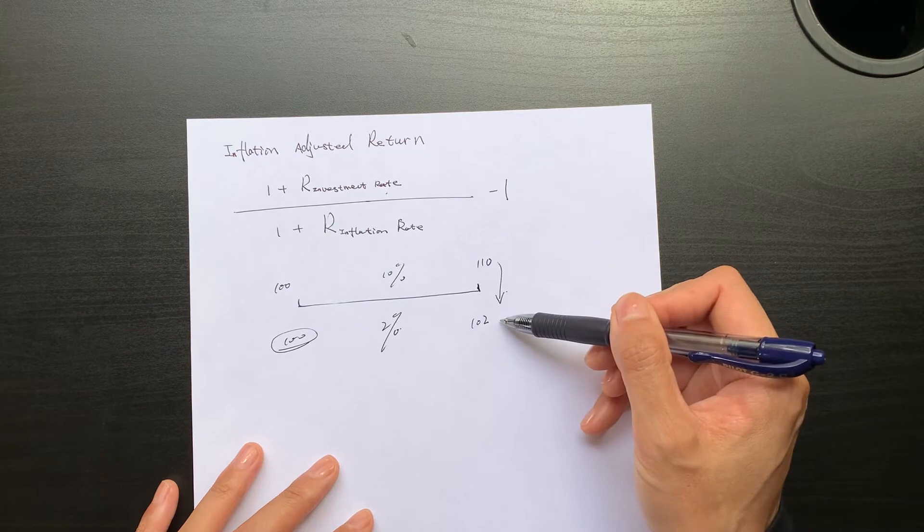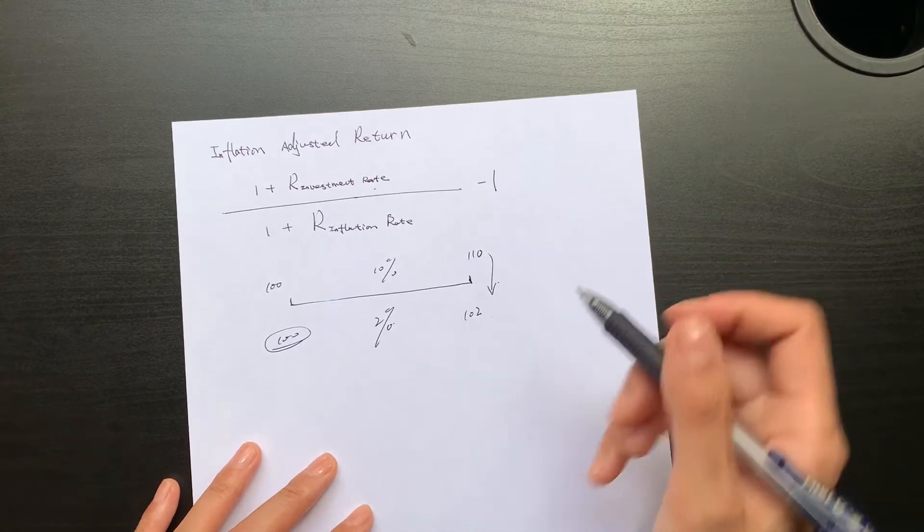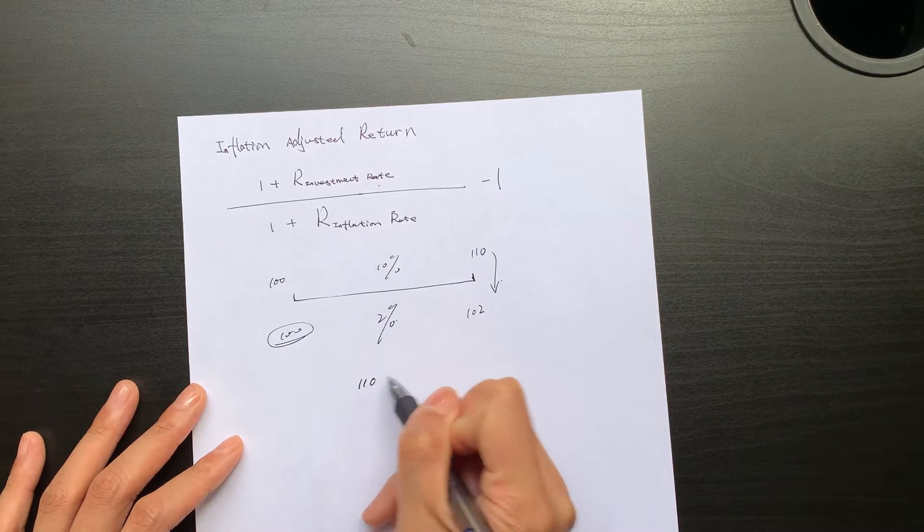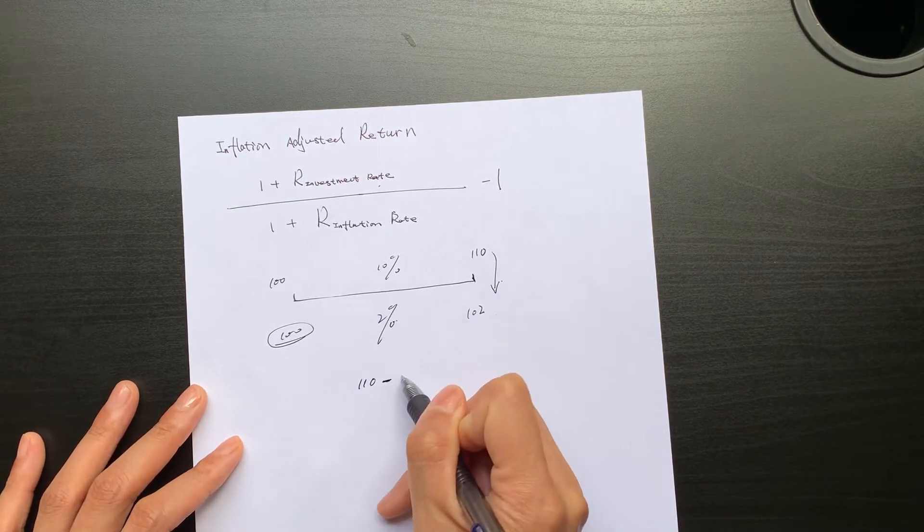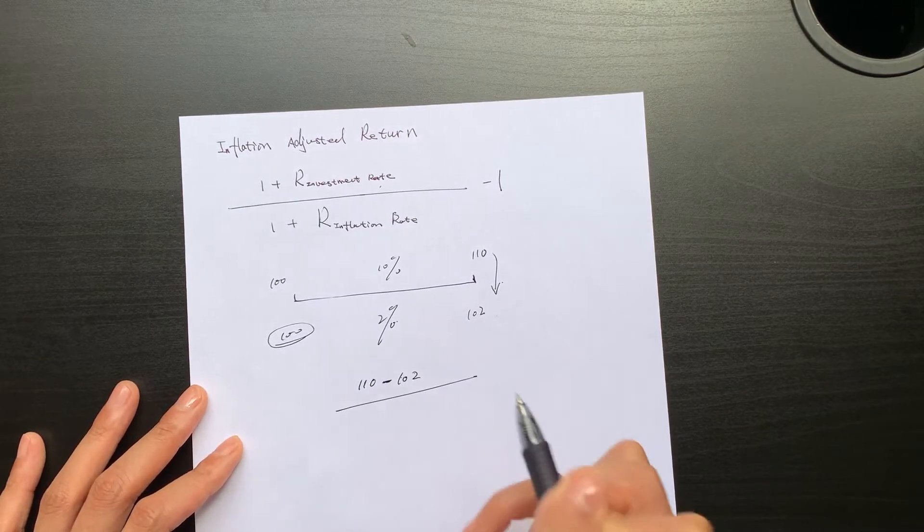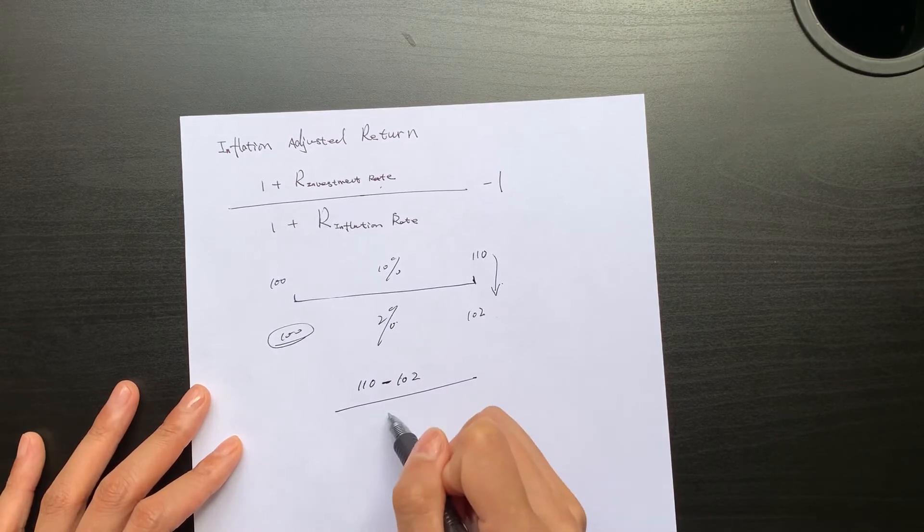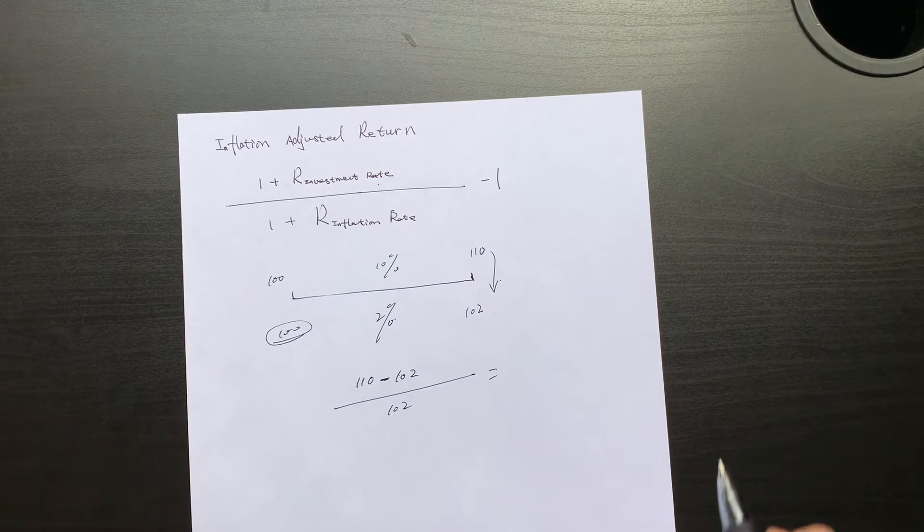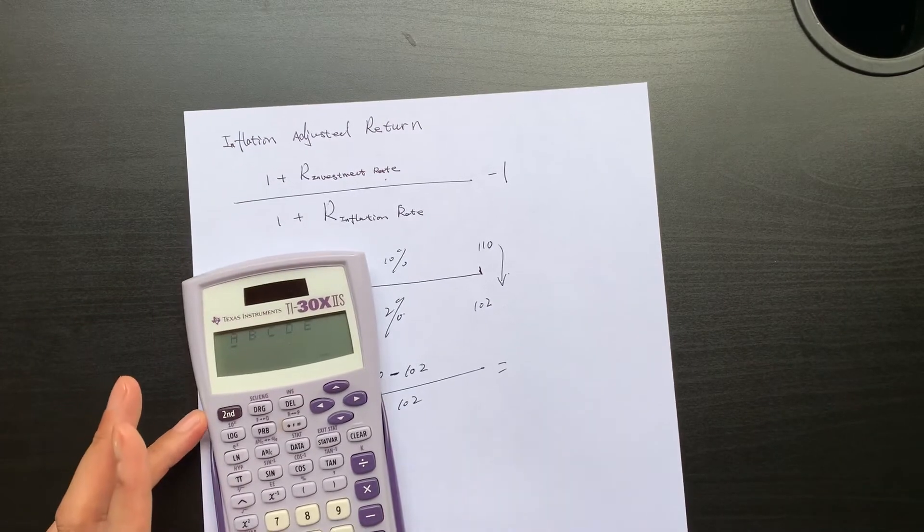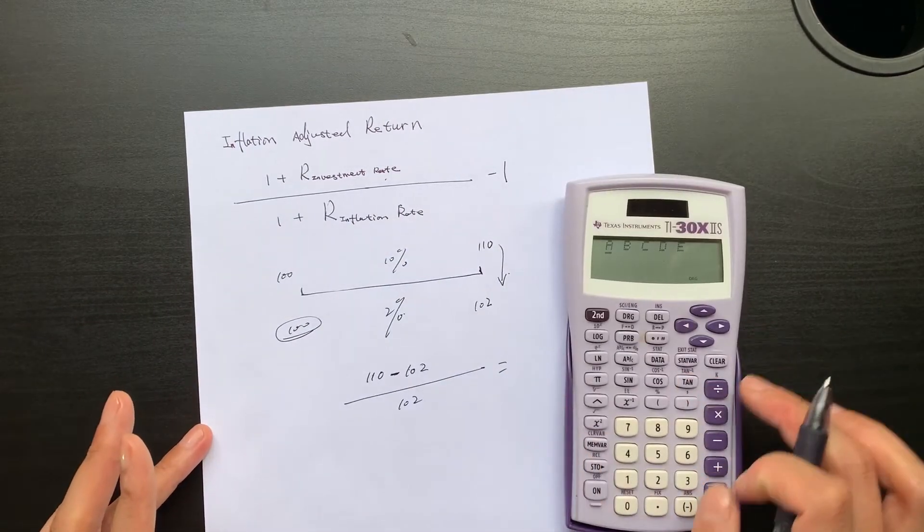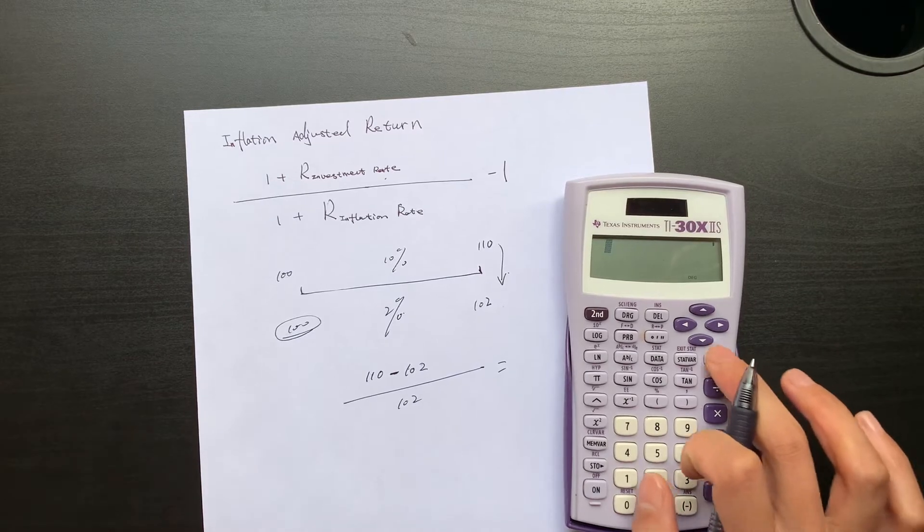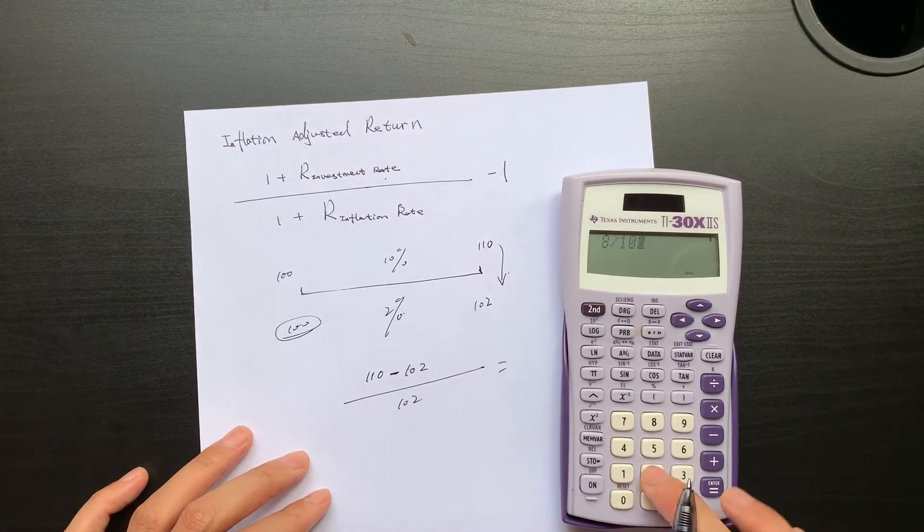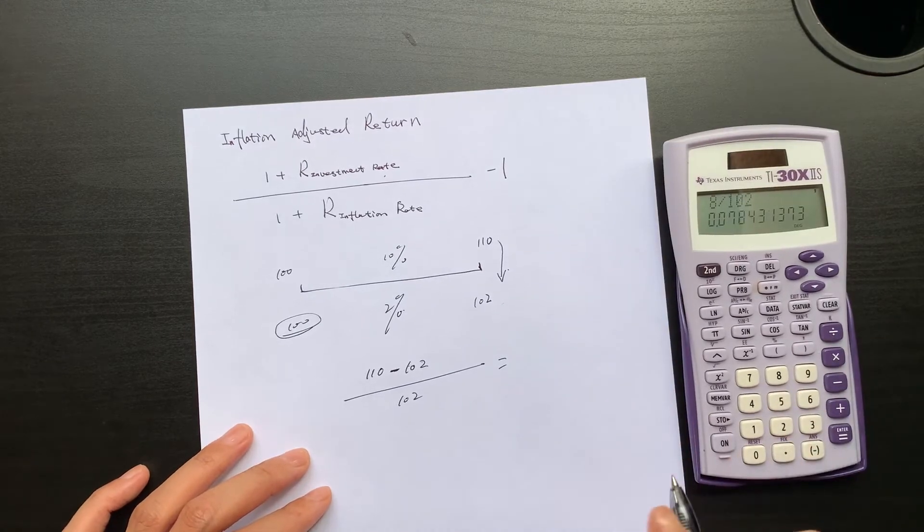So the return is not really 10%. Then what is the return? Your inflation-adjusted return is $110 minus $102, then divide by $102. This equals—let me clear—this is 8 divided by 102, equal to 7.8%.